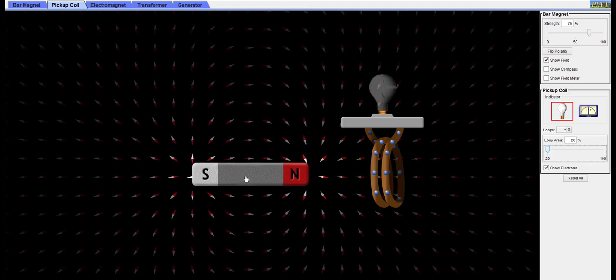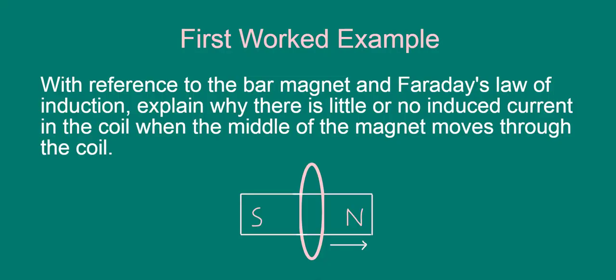Notice anything interesting? For some reason, when the middle of the magnet moves through the coil, the current stops flowing and the lamp stops glowing. This is the first puzzle we want to solve. So our first worked example is, with reference to the bar magnet and Faraday's Law of Induction, explain why there is little or no induced current in the coil when the middle of the magnet moves through the coil. Why not pause the video and see if you can figure this out for yourself? When you're done, unpause the video and we'll go through the answer.